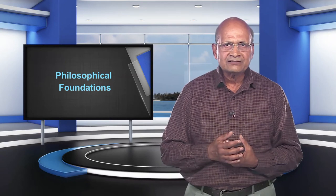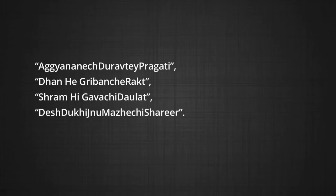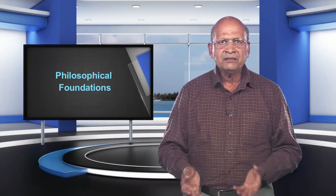The text of the national saint Tukdoji Maharaj in the form of Gramgita is its own testimony. For example: Agyanech Durwate Pargati, Dhan hai garibanche rakht, Sharm hai gavanchi daulat, Desh dukhi jannu majhya chi shreer. Harman Haise's philosophy focuses on becoming, being and then de-becoming. Educational philosophers are disappearing from the Indian scene, and as a result, state and judiciary have started dictating education.